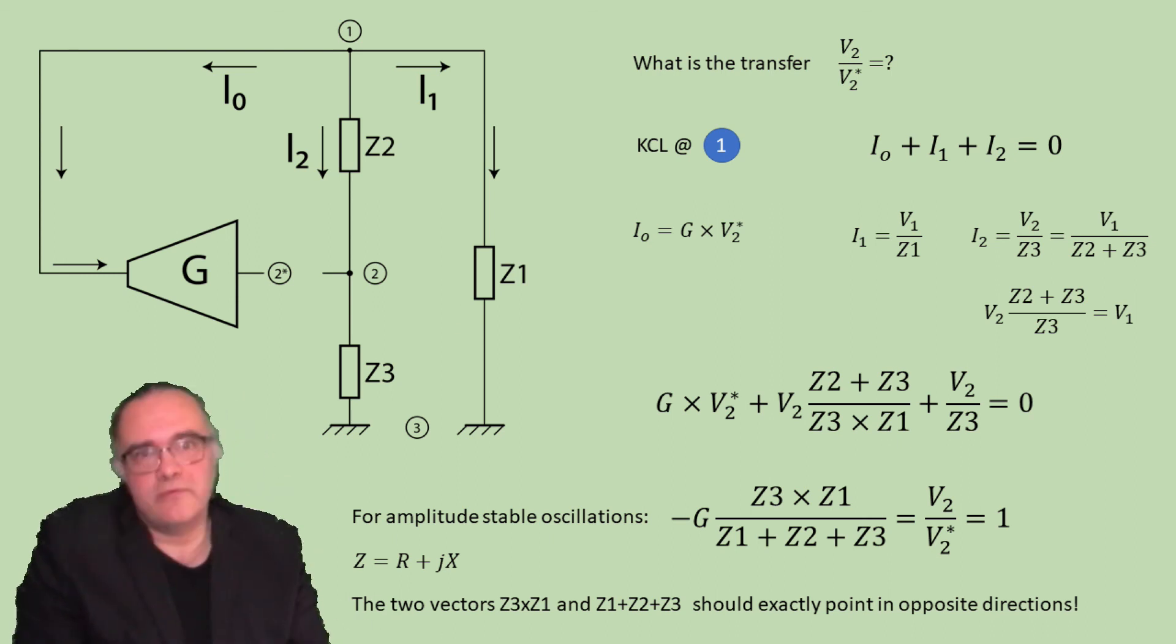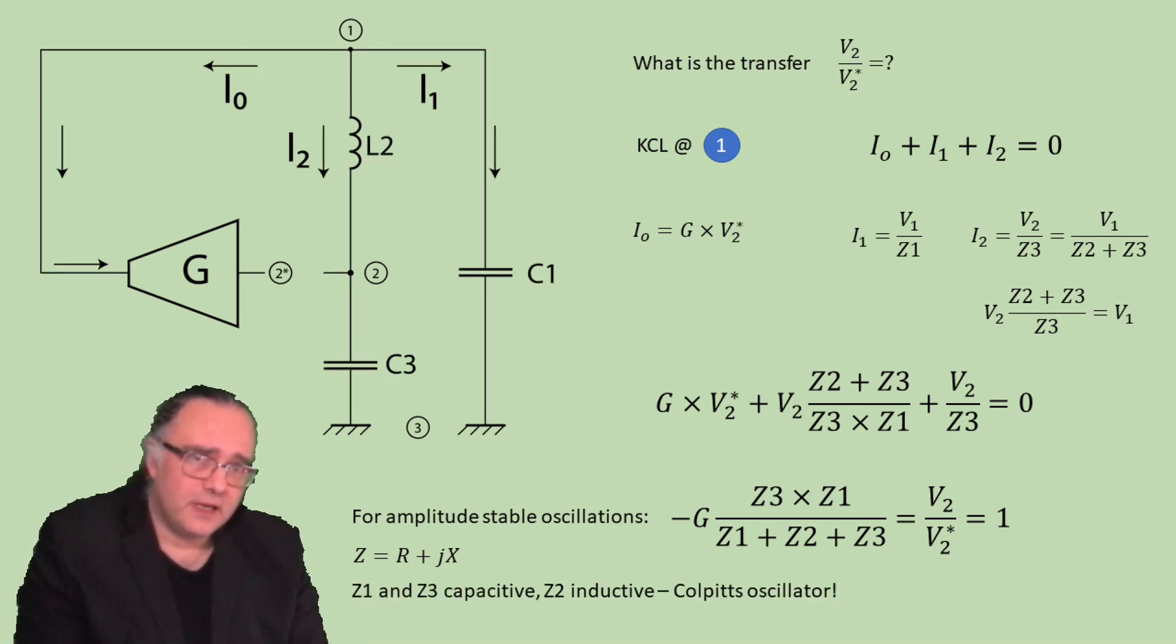Now, this is achieved in two ways. The first way is if Z1 and Z3 are capacitive while Z2 is inductive. And then you arrive to the Colpitz oscillators.